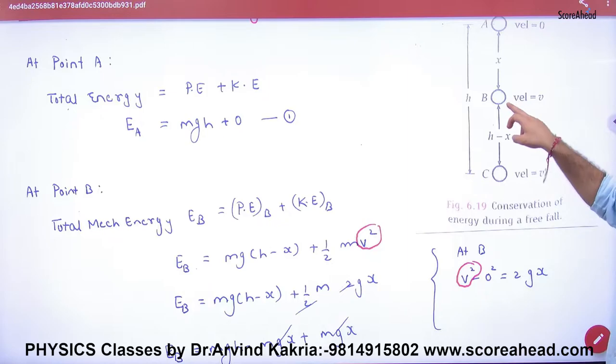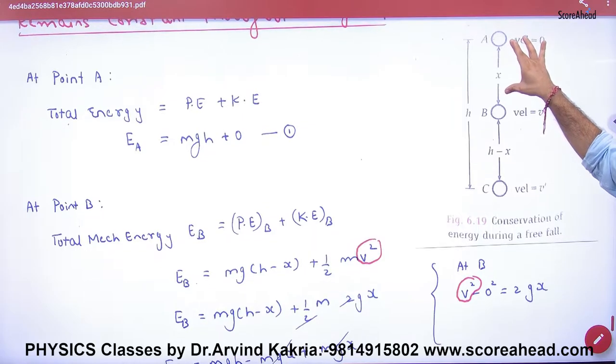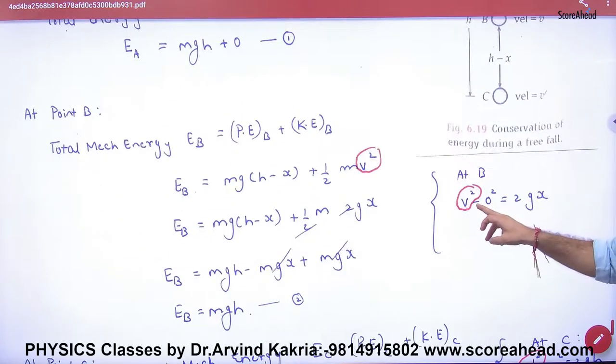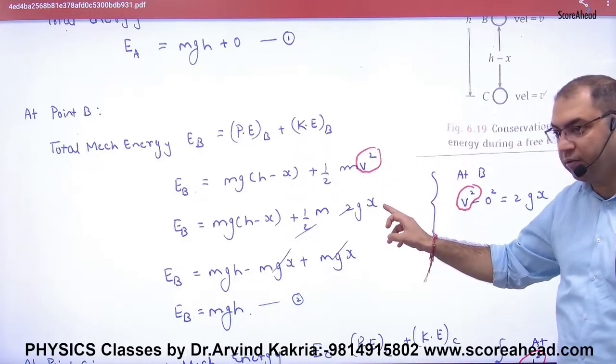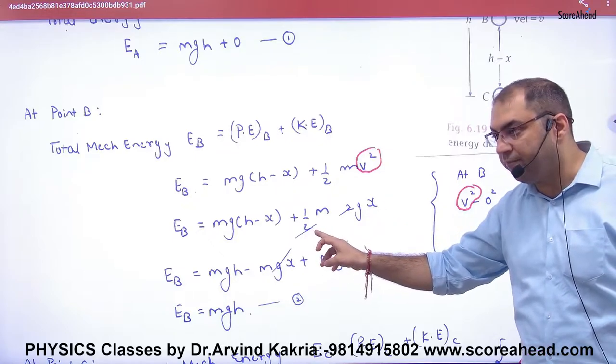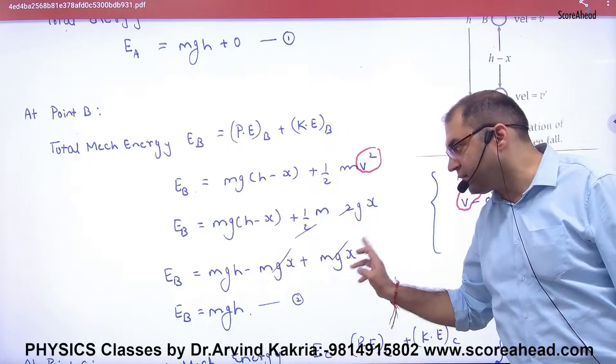Now how is V? V² minus 0² is 2gX because distance traveled is X. Put this V² value here in kinetic: half m(2gX). The 2's cancel. It opened to mgh minus mgX and mgX. Cancel, answer again mgh.